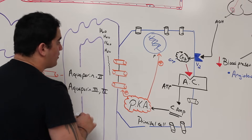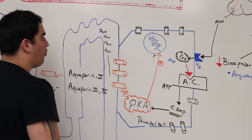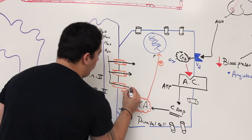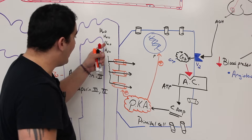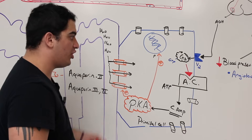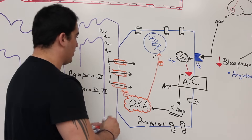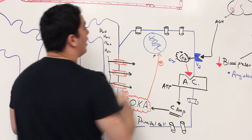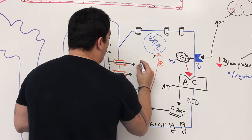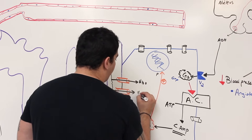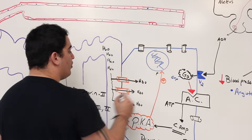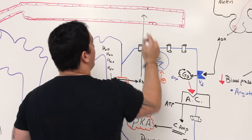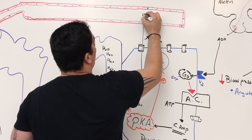Now the aquaporin 2 channels are in the membrane. Water that was going to be lost into the urine flows by, the aquaporin 2 channels open up, and water rushes right into the cell — taken out of the filtrate we would normally urinate. Then this water moves from the cell into the blood, because there's not as much water in the blood.